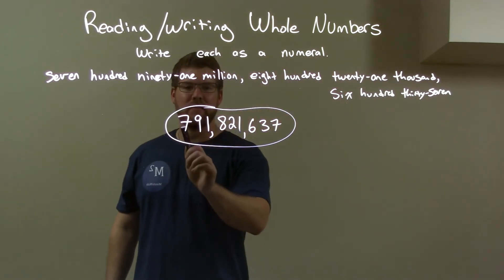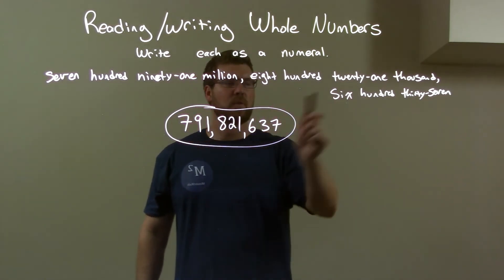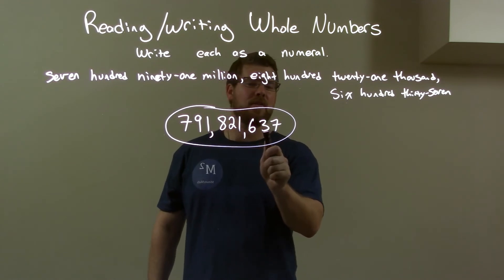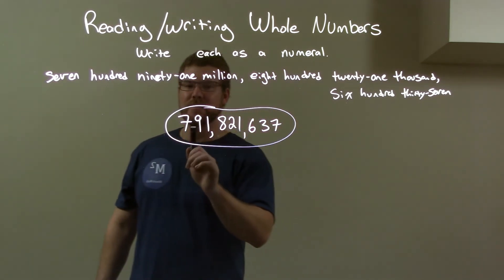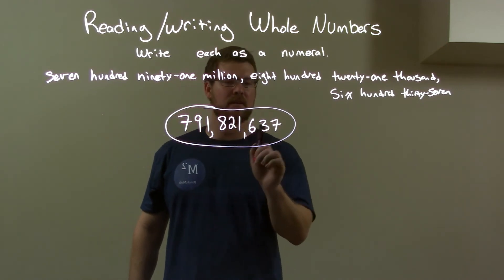We have the 791 right here in the millions, then we have 821,000 right here, and then 637. So again, 791,821,637.